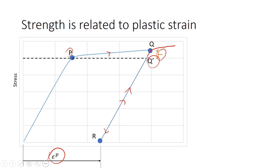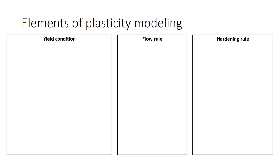With all that background, let's see how to model plasticity. There are three elements to plasticity modeling. They are the yield condition, the flow rule and the hardening rule.